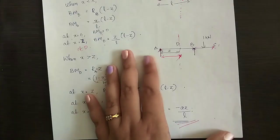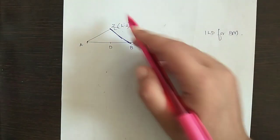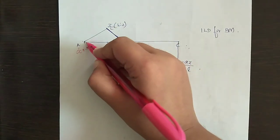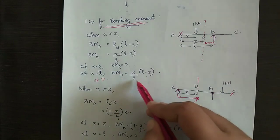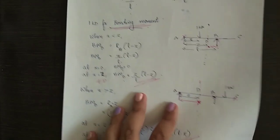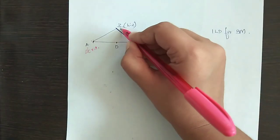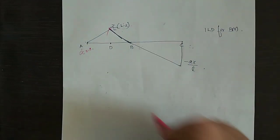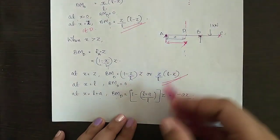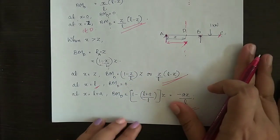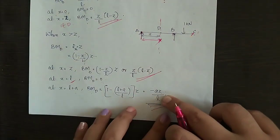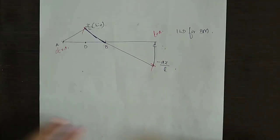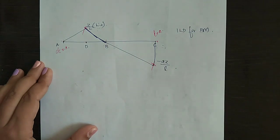Now plotting the ILD for bending moment: at X equals 0 (point A), bending moment is 0. At X equals Z (point D), bending moment is Z by L into (L minus Z). At point B, where X equals L, bending moment is 0. At X equals L plus A (point C), bending moment is minus AZ by L. Marking all these points and joining them gives the ILD for bending moment.